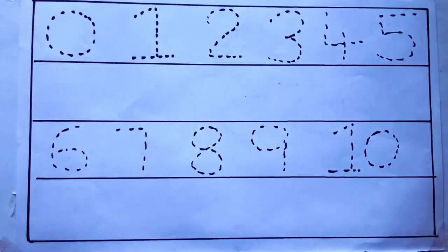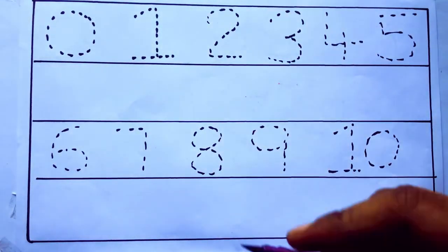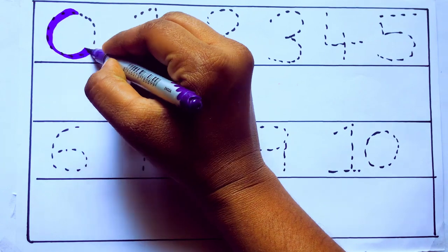Let's draw numbers. Violet color, 0, Z-E-R-O.